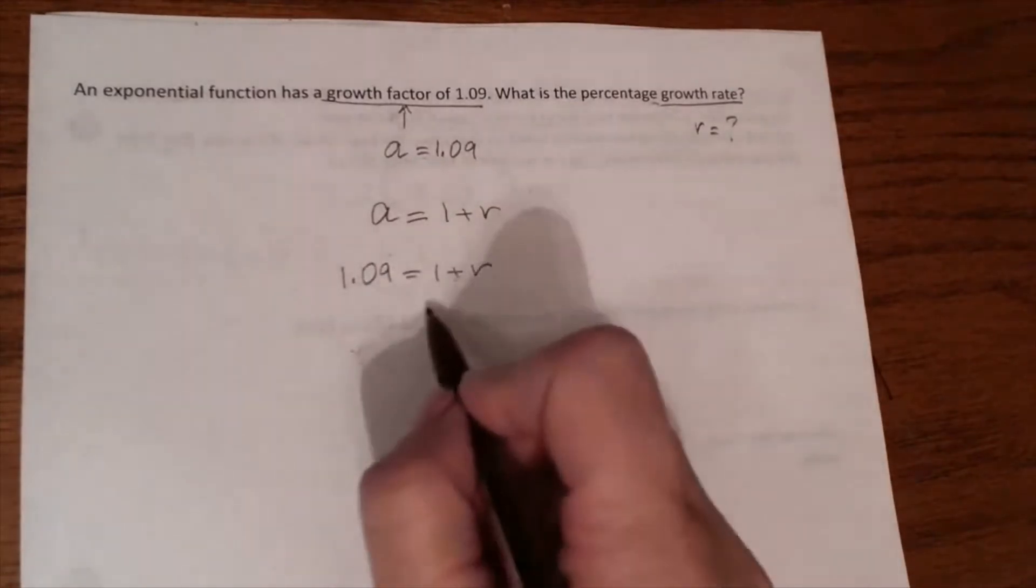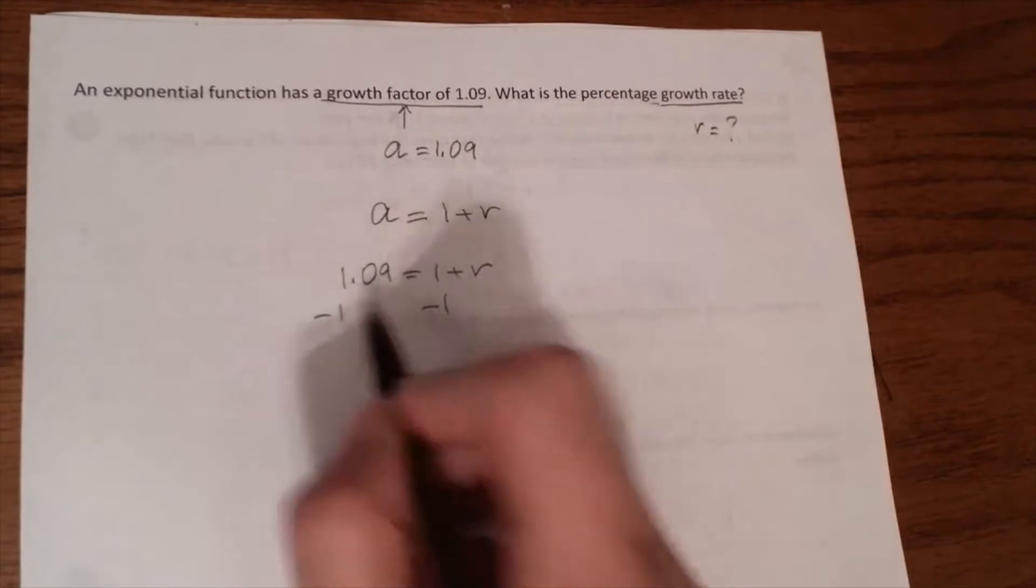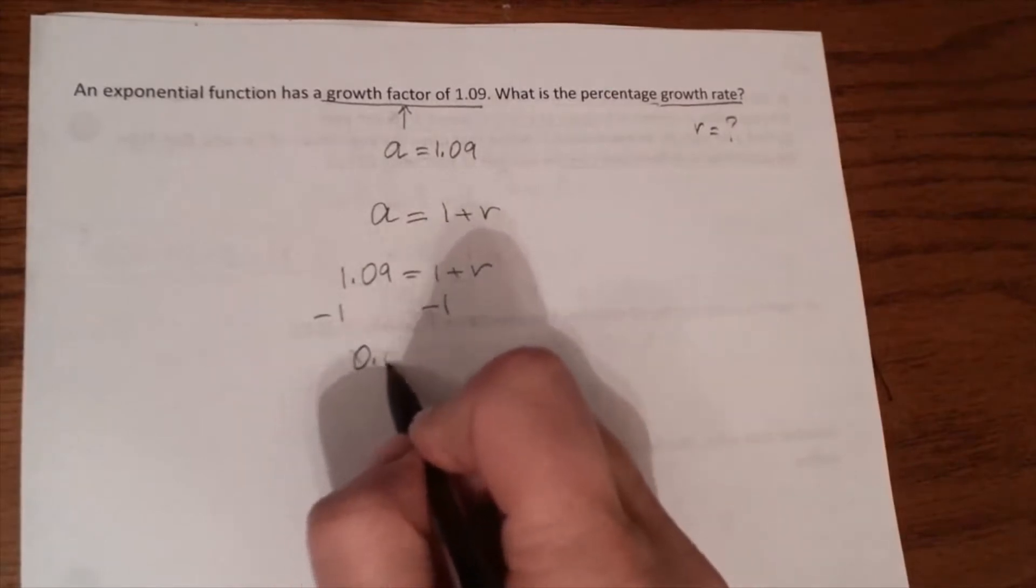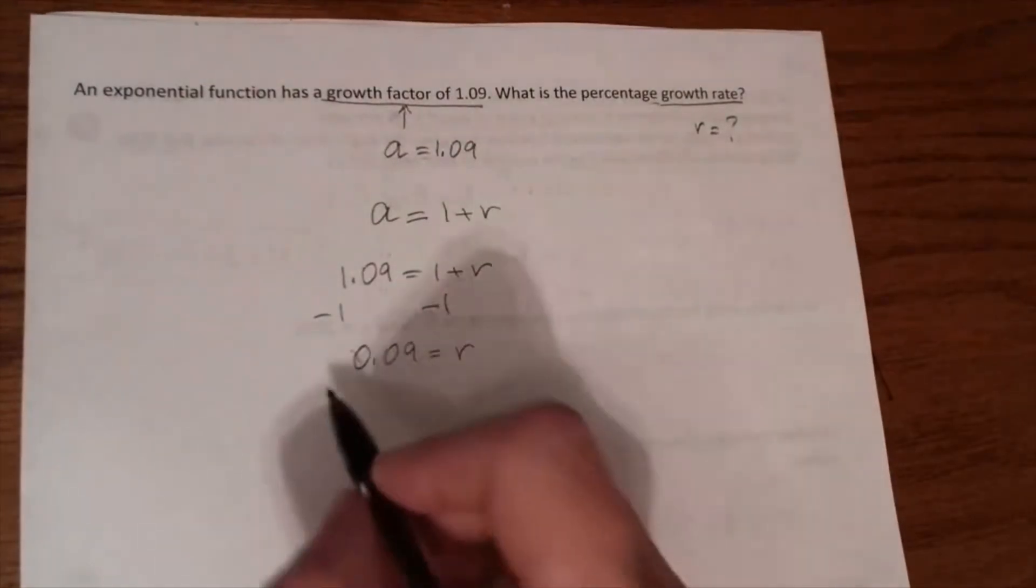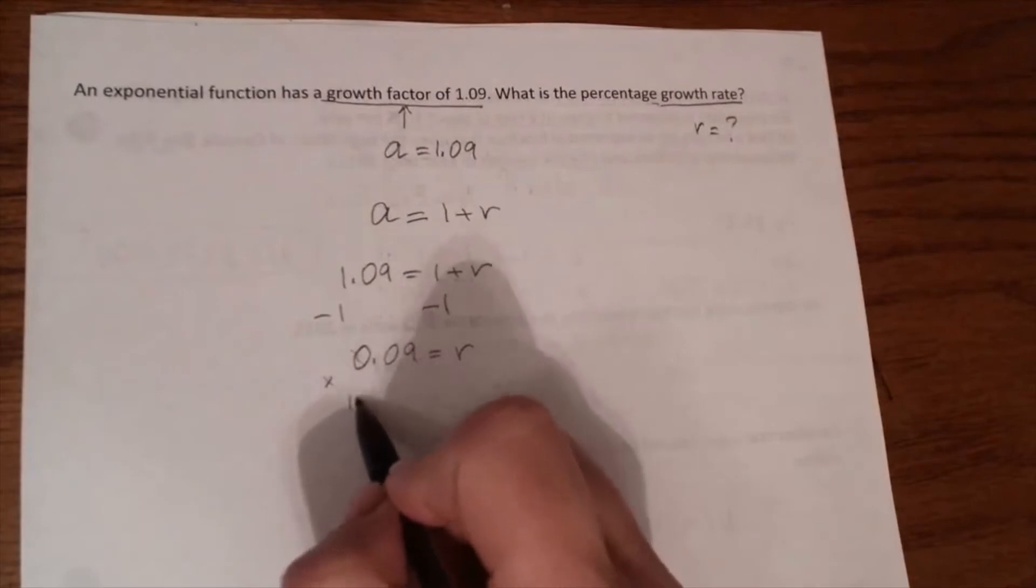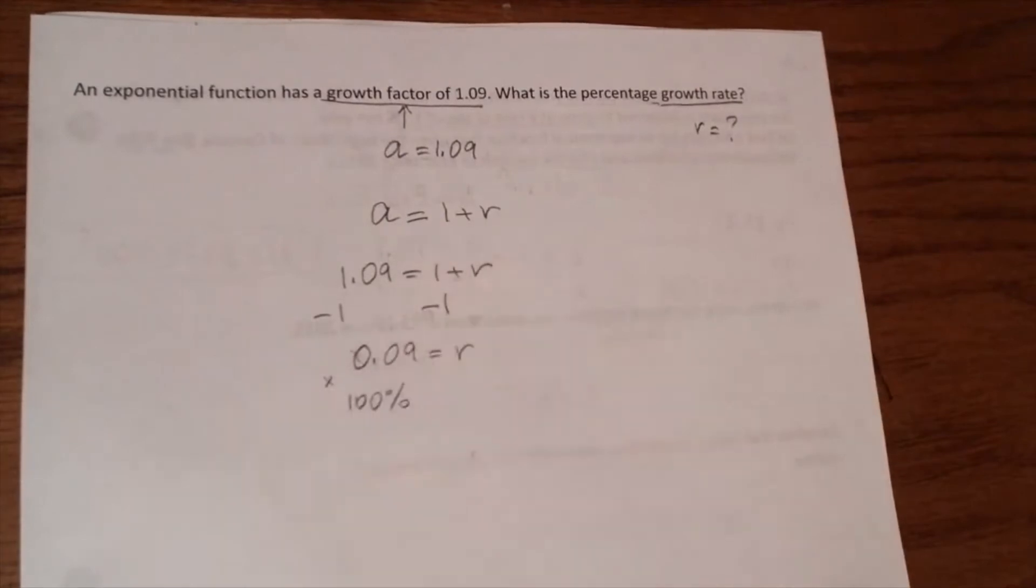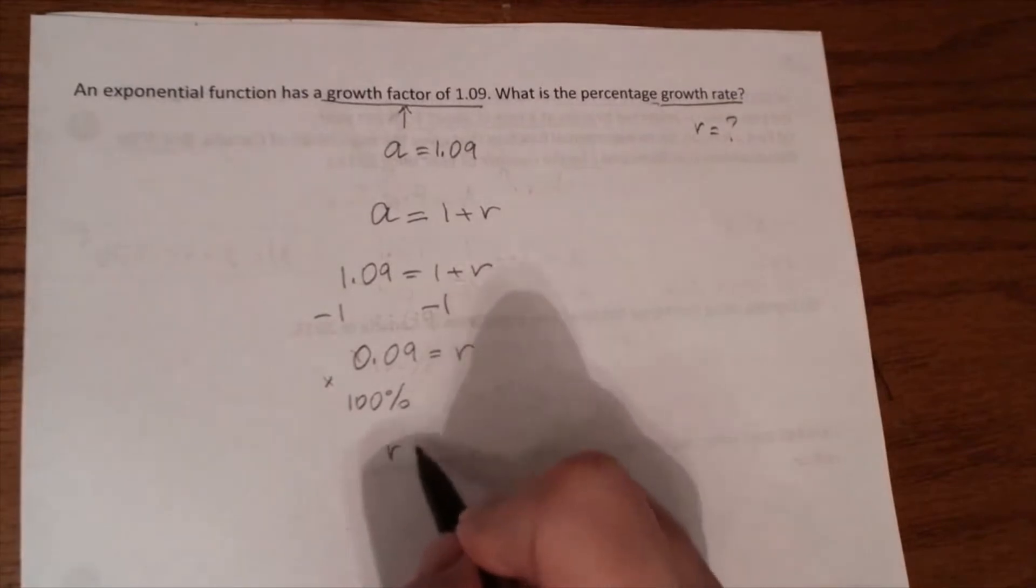Now we will substitute 1.09 instead of a. We will subtract 1 from both sides and your R is 0.09. This is our decimal. We need to change the decimal into percent. We will multiply by 100%, so your R equals 9%.